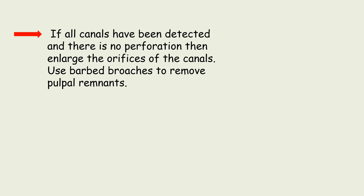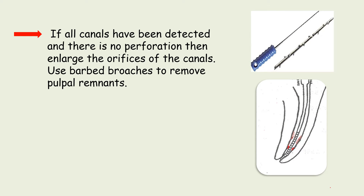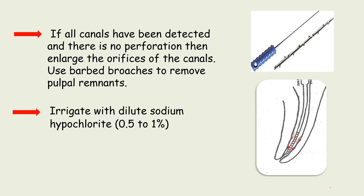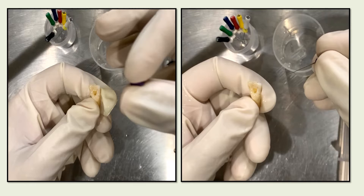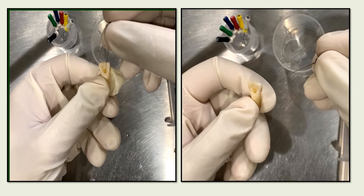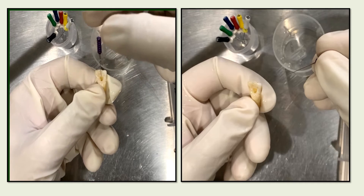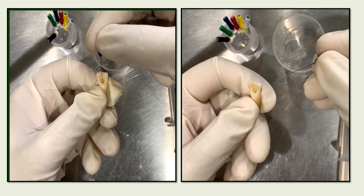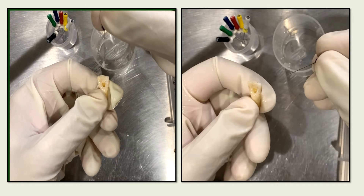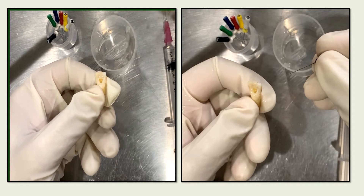If all the canals have been detected and there is no perforation, then we enlarge the orifices of the canals. We use barbed broaches to remove any pulpal remnant that might be present. After that, we irrigate with dilute sodium hypochlorite, which also helps to dissolve the pulpal remnants. To use a barbed broach, after enlarging the canal orifices, take a barbed broach, insert it in the canal and rotate it in a clockwise manner. This engages any pulp that might be present in the canal, and when we pull it out, we can remove the pulp.